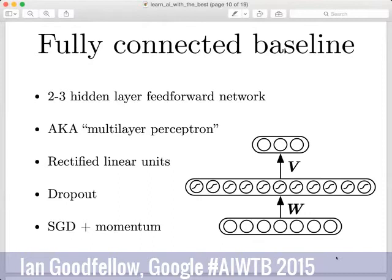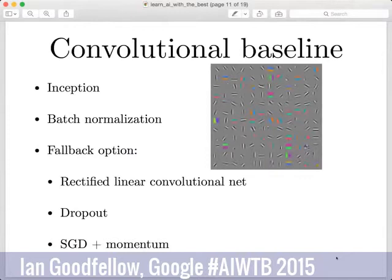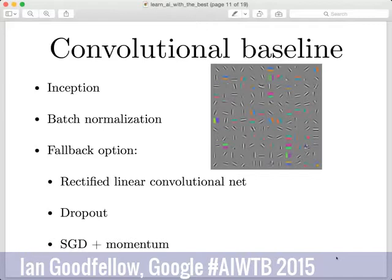If your data has image structure, you want to use a convolutional network, and I have strong recommendations here. If you're able to do it, I suggest using an inception network trained with batch normalization — in a lot of cases you can train as deep a network as you want just by using this batch normalization algorithm released by my colleagues at Google earlier this year. If your library doesn't support inception, fall back to a simpler convolutional network with rectified linear units, regularized with dropout, and trained with stochastic gradient descent and momentum.